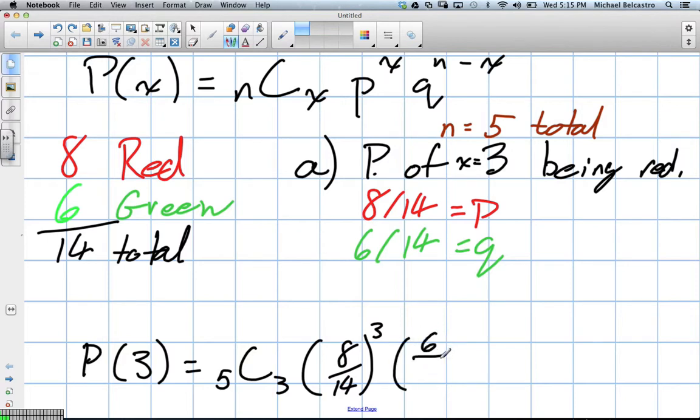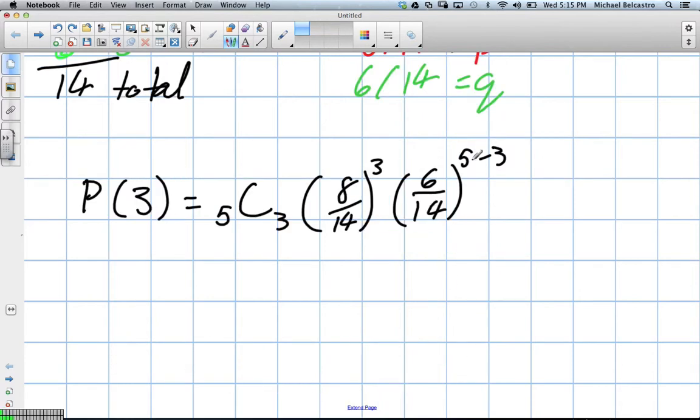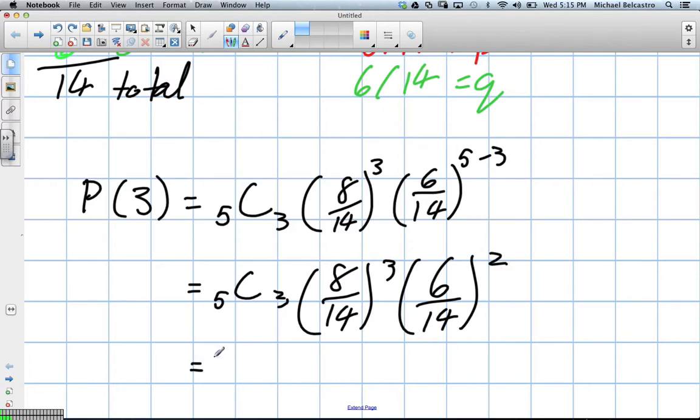Our probability is our eight out of 14 to the power of our three, multiplied by six out of 14, which is the probability of failure, and five minus three, which is essentially two of them not being red, the other two being green. So we have our combination, five choose three, eight over 14 to the power of three, multiplied by six over 14 to the power of two.